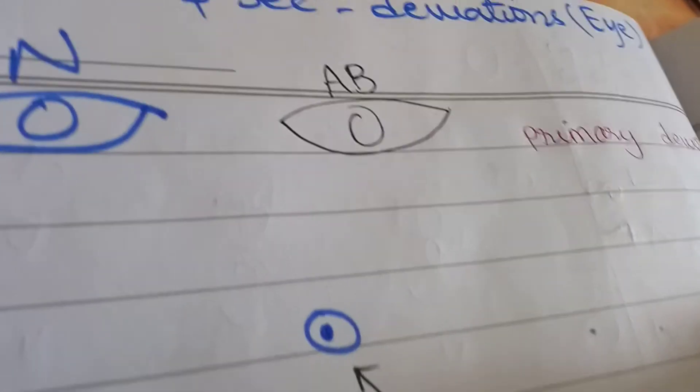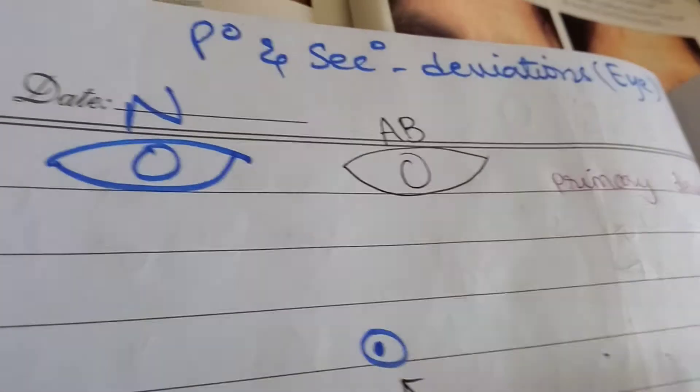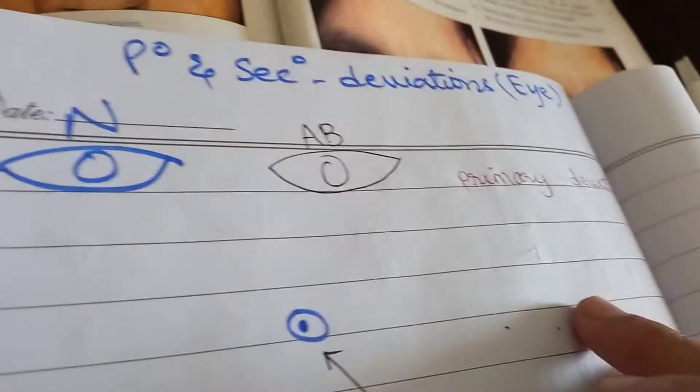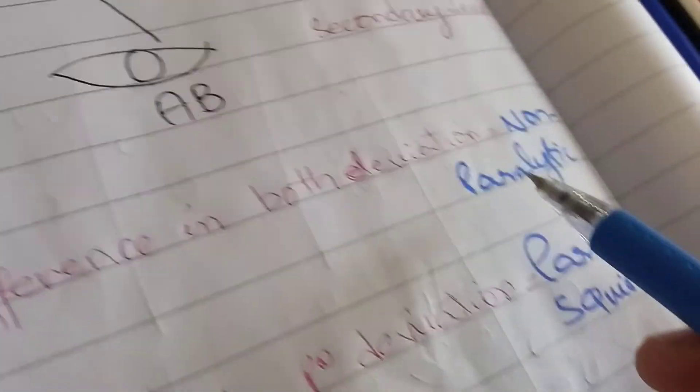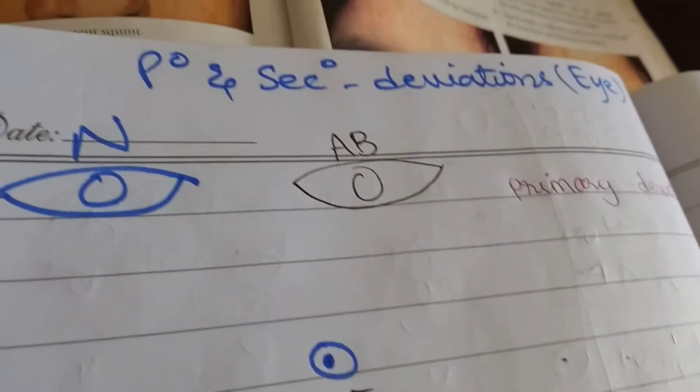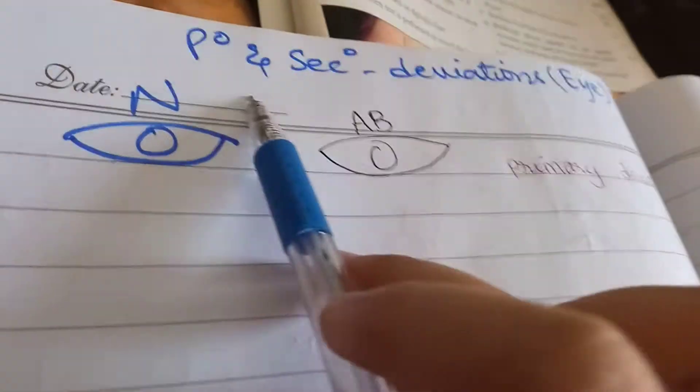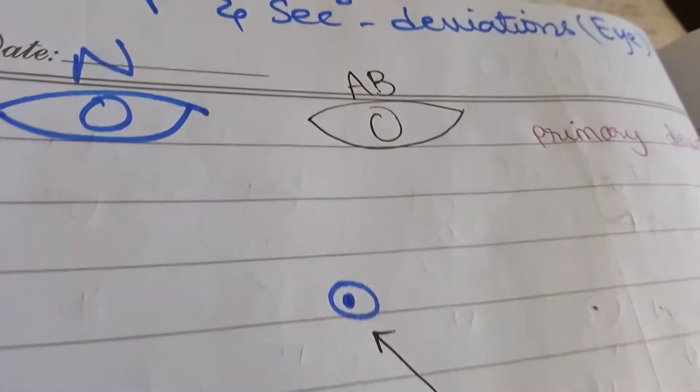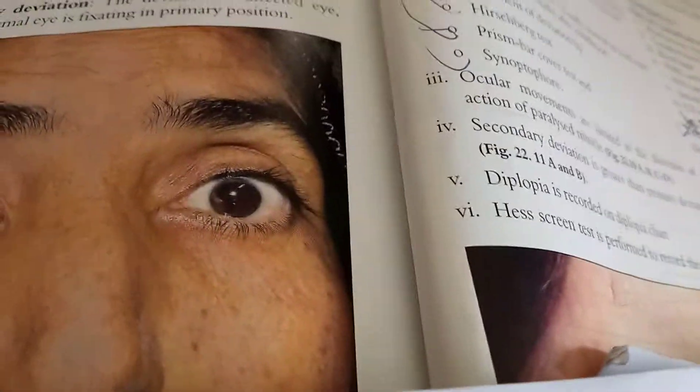Bismillahirrahmanirrahim. Now we are going to go through the simplest test that will differentiate between the paralytic and the non-paralytic squint — that is the difference between the primary and the secondary deviation of the eyes. One of my friends is confused, so I'm going to help her out today.